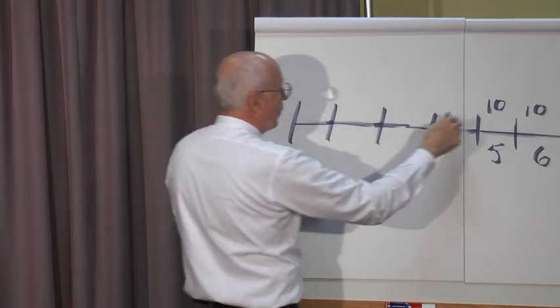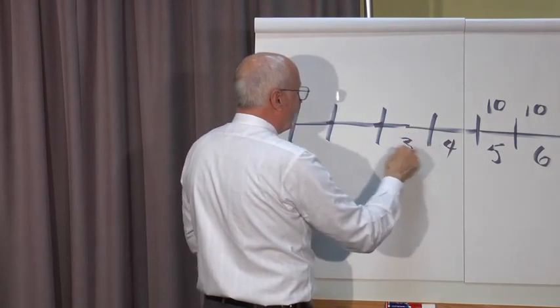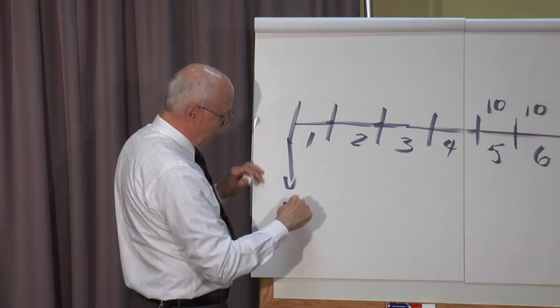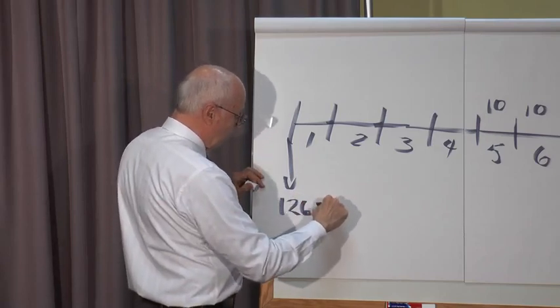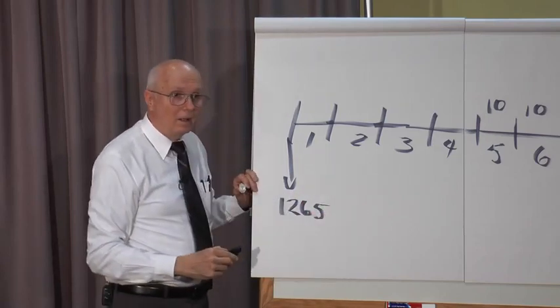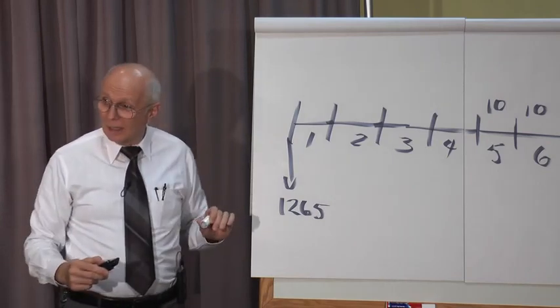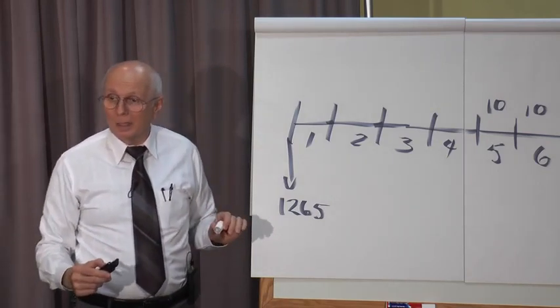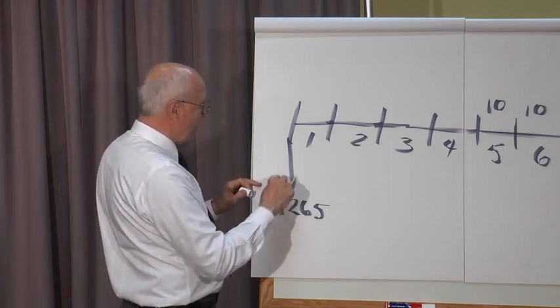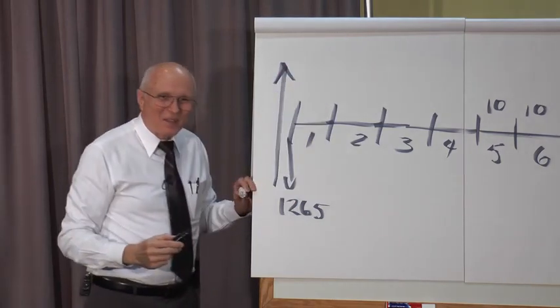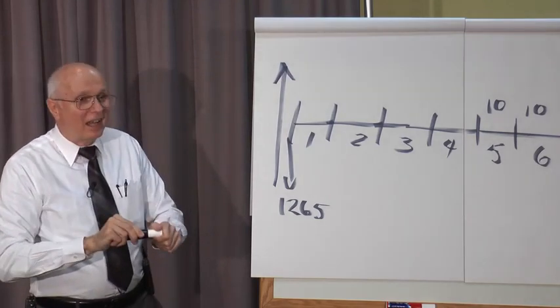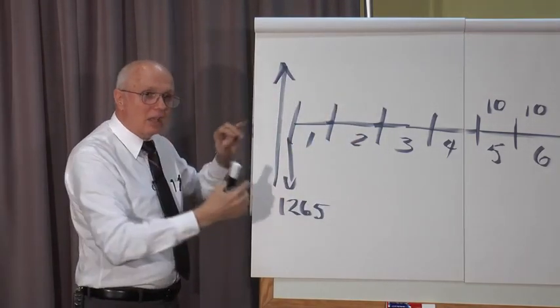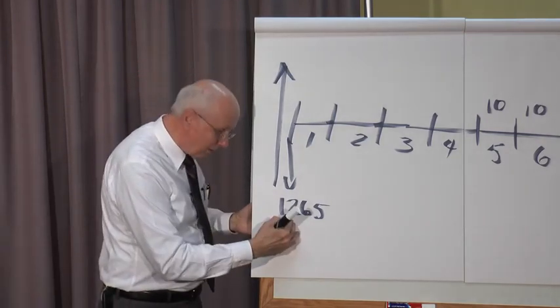So four, three, two, one. And this day here becomes day 1265, which is a Monday. How do I know it's a Monday? Because day 1264 is a Sunday when the 144,000 are taken to heaven as first fruits. And the day following Sunday is always what? Monday.